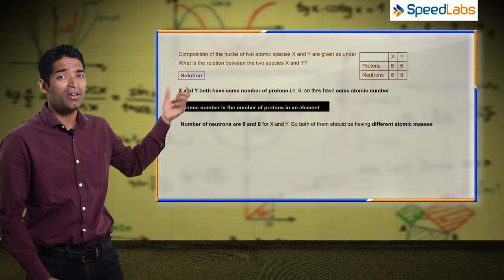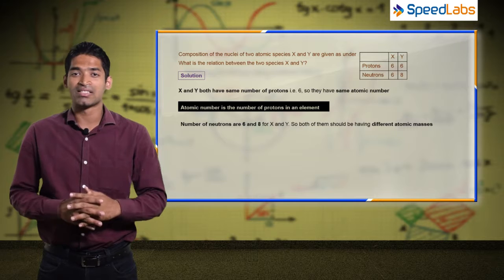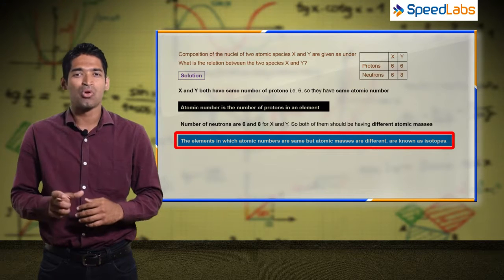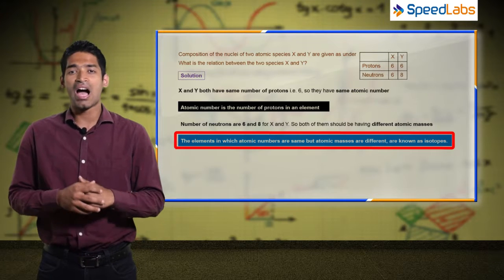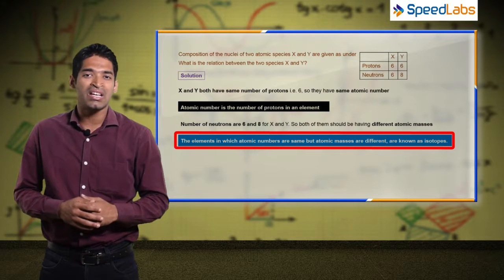So both of them should be having definitely different atomic masses. An element in which atomic number is the same but atomic masses are different, we call isotopes. So X and Y are related to each other as isotopes.